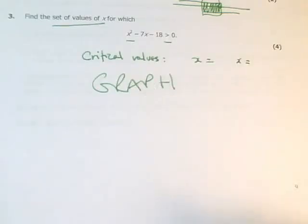A bit like we did in the previous question. Find the critical values and then use the graph to decide whether you want to be between those critical values or outside them. Write down your answer clearly and you're done.